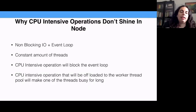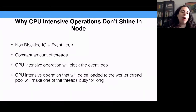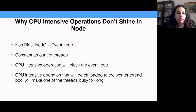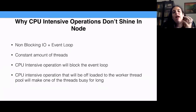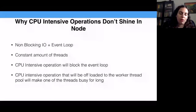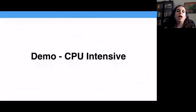Let's talk about why CPU-intensive operations don't shine in Node.js. We have a constant number of threads: the event loop is one thread, plus the worker thread pool which is also a constant amount of threads. Every CPU-intensive operation, if not offloaded to the worker thread pool, will block the event loop and your server will appear frozen. If it is offloaded to a worker thread, because there's a constant amount of threads, one of your worker threads becomes blocked with that long operation. I prepared a small demo to show this.